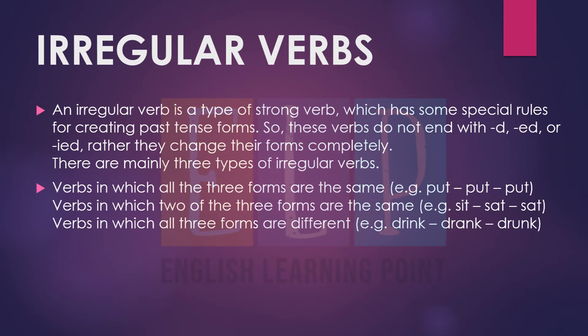The three types are: first, verbs in which all three forms are the same — for example, put, put, put. Second, verbs in which two of the three forms are the same — like sit, sat, sat. Third, verbs in which all three forms are different — like drink, drank, drunk. So in 'put, put, put' all three forms are the same; in 'sit, sat, sat' the second and third forms are the same; and in 'drink, drank, drunk' all three forms are different.